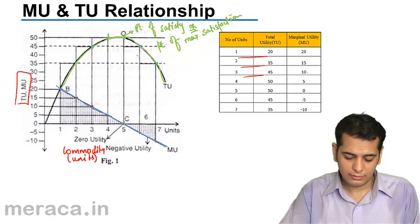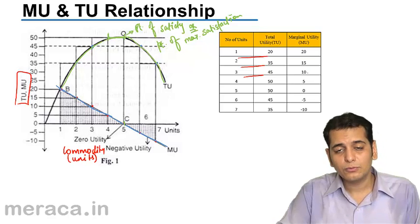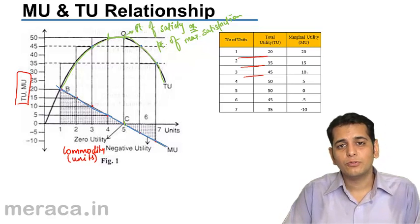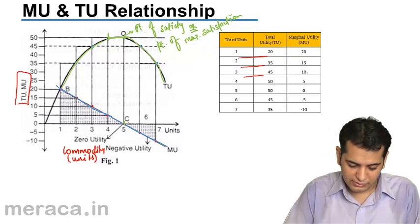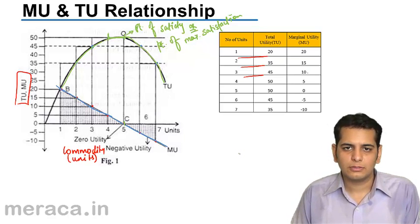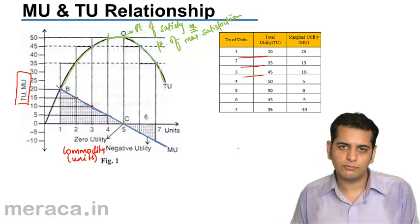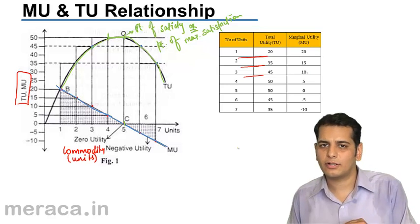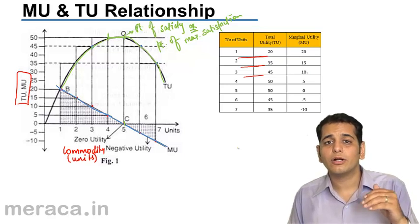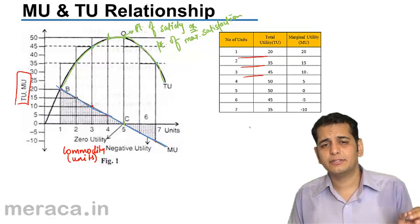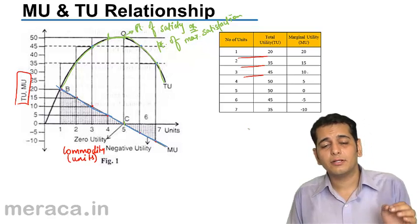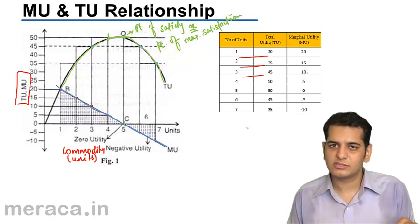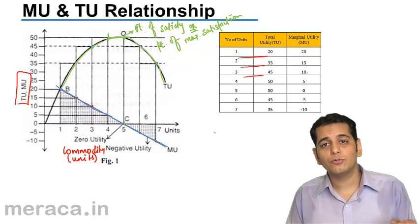Now again, if you take a close look, the TU starts to fall after the point of satiety. Correspondingly, MU goes below the x-axis now. Once MU goes below the x-axis, TU starts to fall. So this is how the MU curve and TU curve are related. When the MU curve is declining, TU curve goes on increasing. After a certain level, the TU curve stabilizes and becomes constant. And when the MU curve touches the x-axis, there the TU curve is at its maximum point and this point is known as the point of satiety. After this, when MU goes below the x-axis, the TU curve starts to fall.